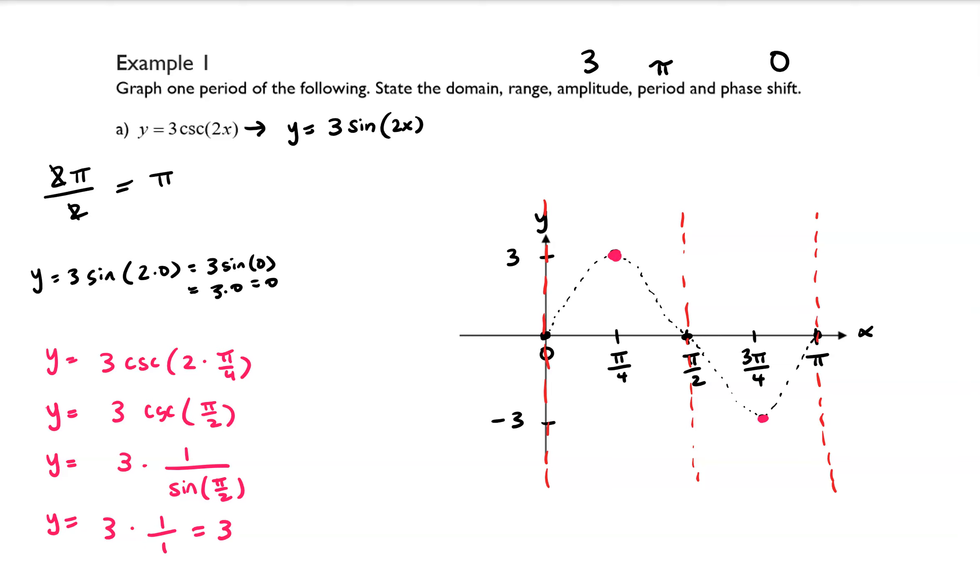So that's how I know that the y value at that point is 3 when I plug in pi over 4, and then everywhere else it's going to look like this. And that is one period of this graph.